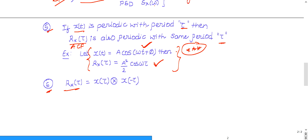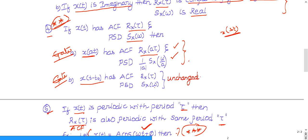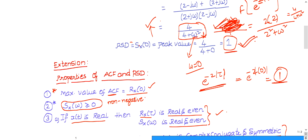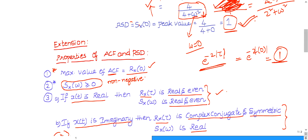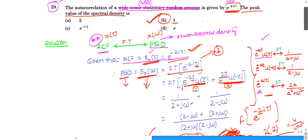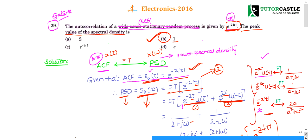Property 6: R_x(τ) can be easily obtained by convolving x(τ) with x(−τ). These six properties are very important for GATE. If you have any queries, please post in the comment box and subscribe to the channel for more updates.